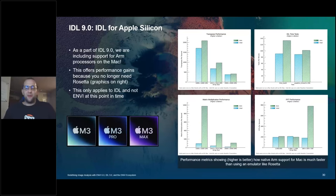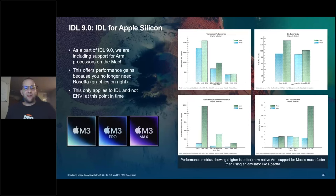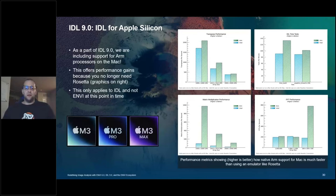One last thing before we wrap up Envy and IDL: as part of IDL 9.0, we now have support for IDL on Apple Silicon. This is just IDL, not IDL and Envy at this point, but about a third of IDL users are on Mac, and all new Macs have Apple Silicon. You can now use IDL natively on ARM on Mac. Performance charts show that our native ARM build versus Rosetta Intel emulation is much better — for almost every benchmark the green ARM bars are higher.